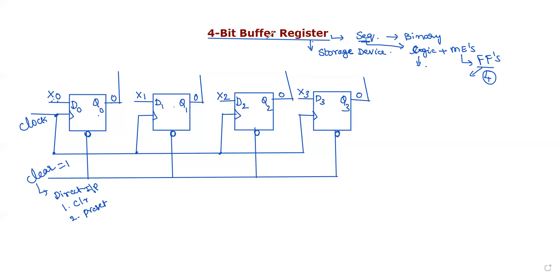Next, this is called a buffer register. Buffering means a buffer is a logical operator where whatever input you give, the same output comes out. If you give input A, output is A; if you give 0, output is 0; if you give 1, output is 1. So the register that performs this buffering operation — where the input equals the output — is called a buffer register.